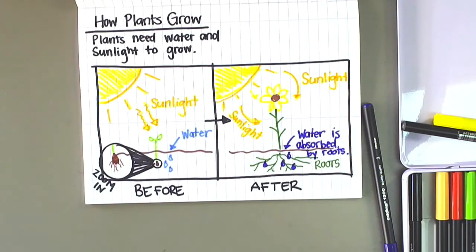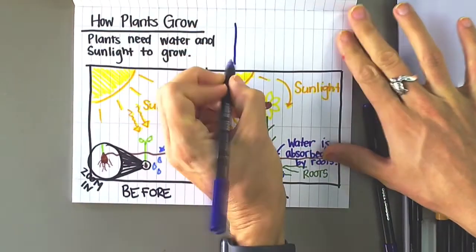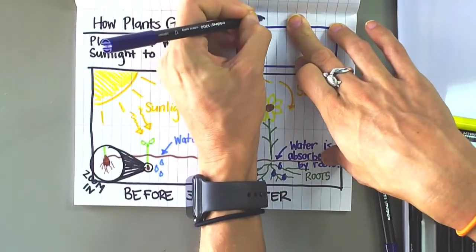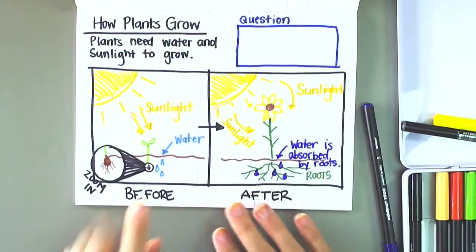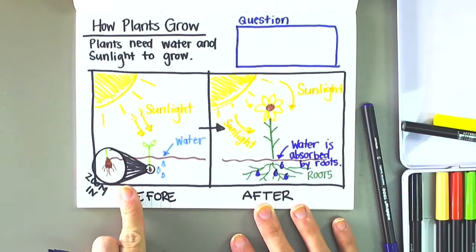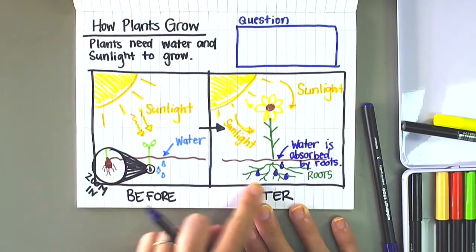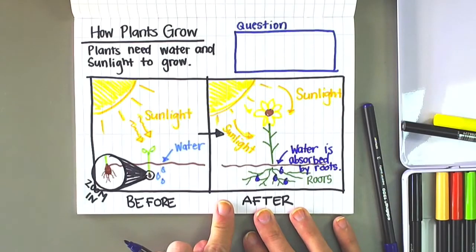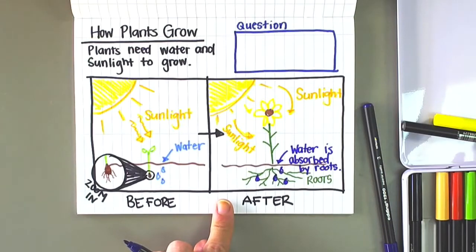Finally, you might want to add a question for further research. So even though I understand that plants need water and sunlight to grow, I might still be thinking what would happen to a plant if it doesn't get sunlight or water, or how long would it take for the plant to start growing?